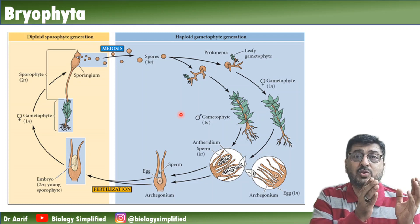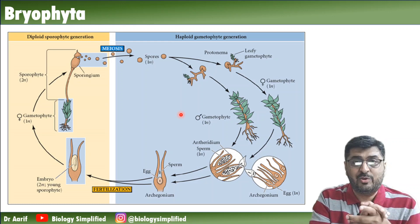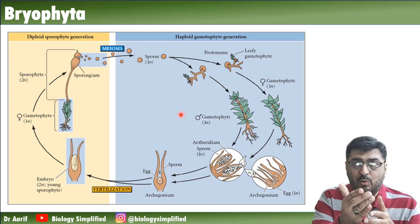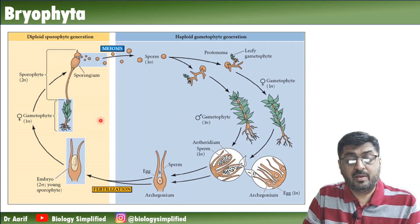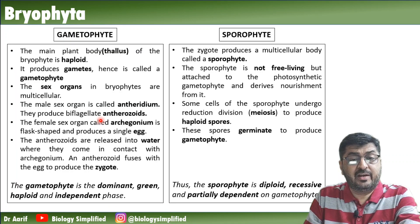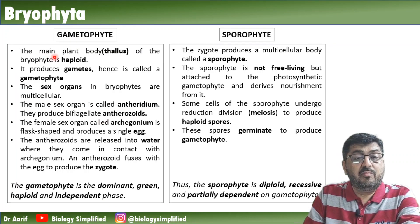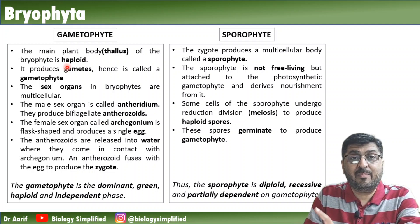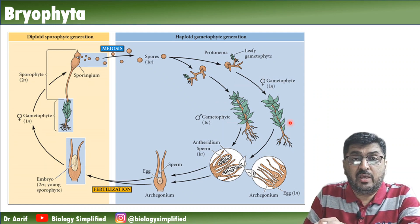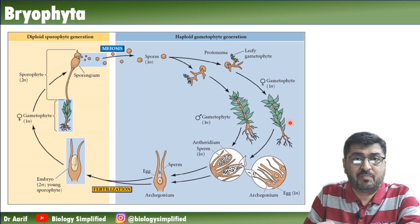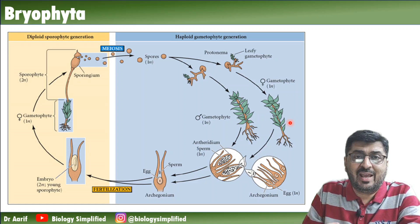Normally, a zygote should form a sporophyte which should undergo meiosis. But in algae, the sporophyte doesn't persist. For convenience, I have divided the life cycle into gametophyte and sporophyte sections. The main plant body of the bryophyte is haploid - it's a gametophyte. This is the main plant body, which is a structure that will produce the gametes.